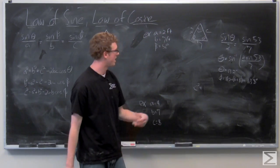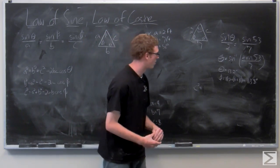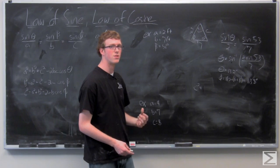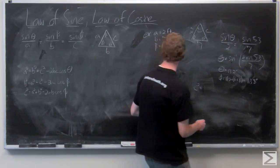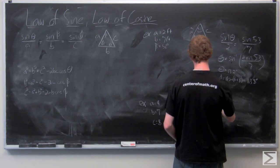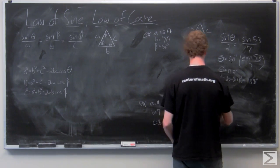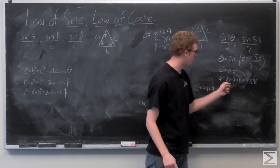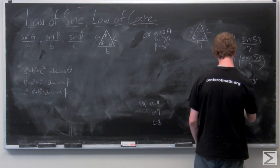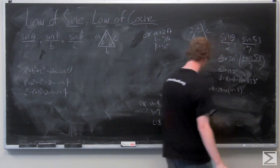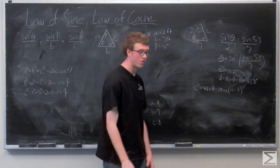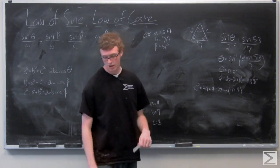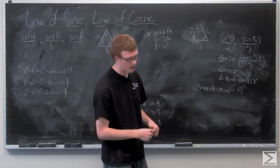We have C squared equals A squared plus B squared minus 2AB cosine of phi. We have A equals 2 and B equals 7, so I'll go ahead and do those multiplication steps. With phi equal to 113.8 degrees, C is the square root of all of that. You need a calculator to figure it out, but you get C equals 8.019.